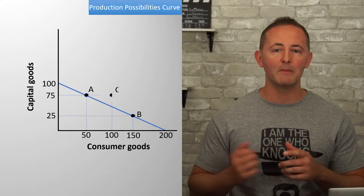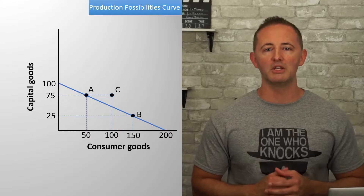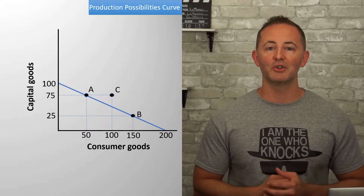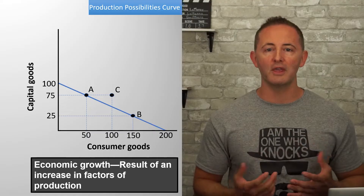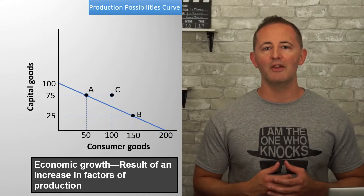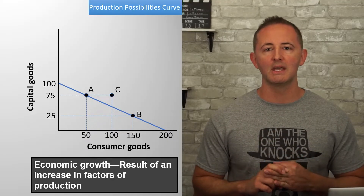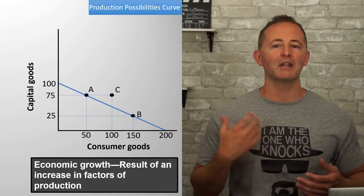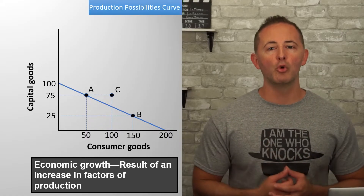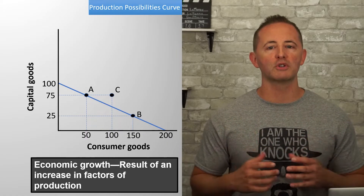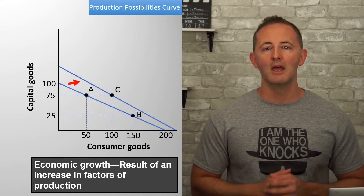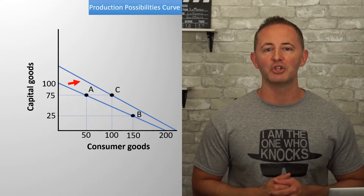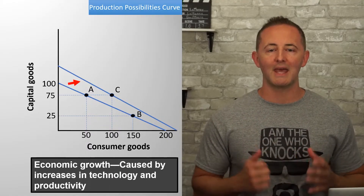On the other hand, any point outside the PPC is not currently a possible combination of goods that can be produced. But it is possible that combination can be produced in the future as a result of economic growth. Economic growth is the result of an increase in our factors of production. So if land, labor, or capital increases, the possibilities of what can be produced will also increase. More natural resources, more machinery, better tools, better technology, and a better educated workforce will all cause our PPC to shift outward to the right. Additionally, increases in technology and productivity cause economic growth.